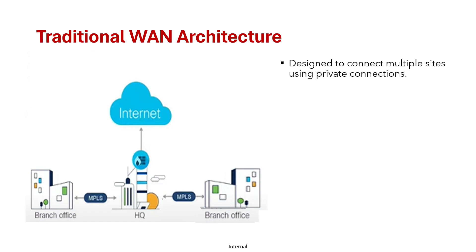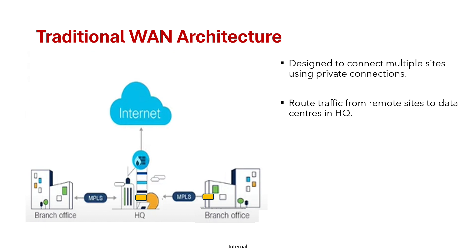Traditional WAN networks were designed to connect multiple sites such as HQ and branch offices using private connections such as MPLS or other overlay solutions such as DMVPN and I-WAN, to ensure secure and reliable connectivity. It was built to route traffic from remote sites to the data center in HQ.